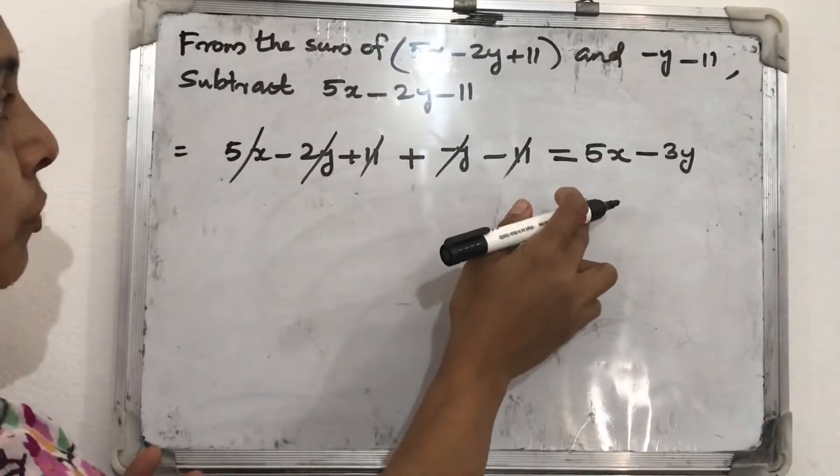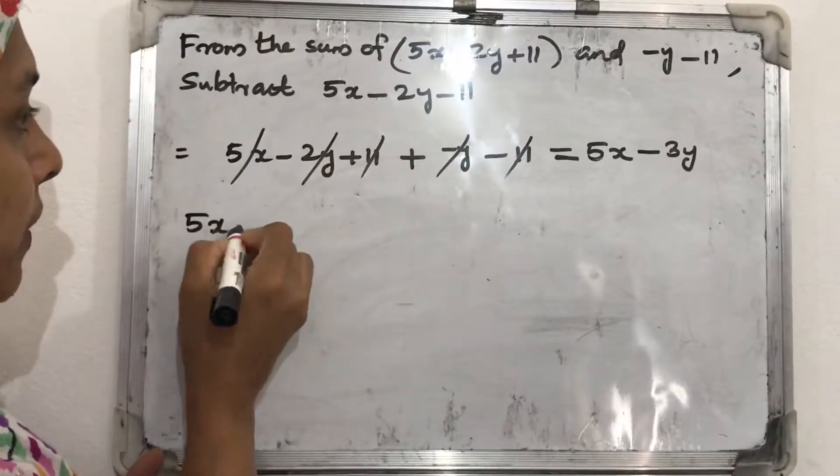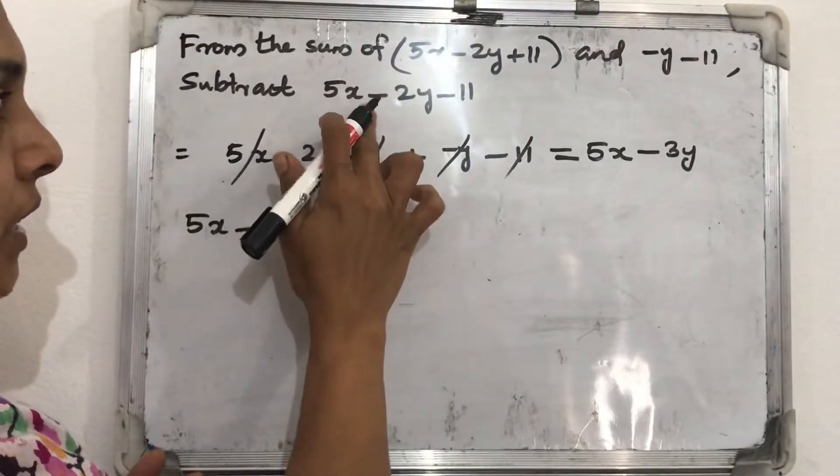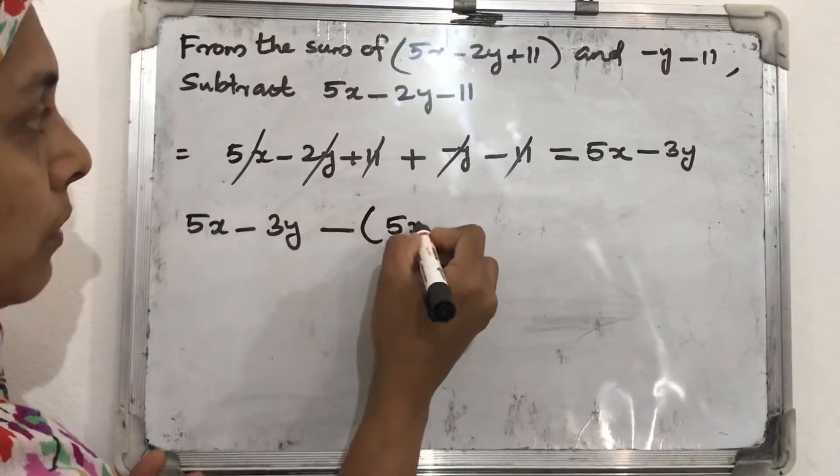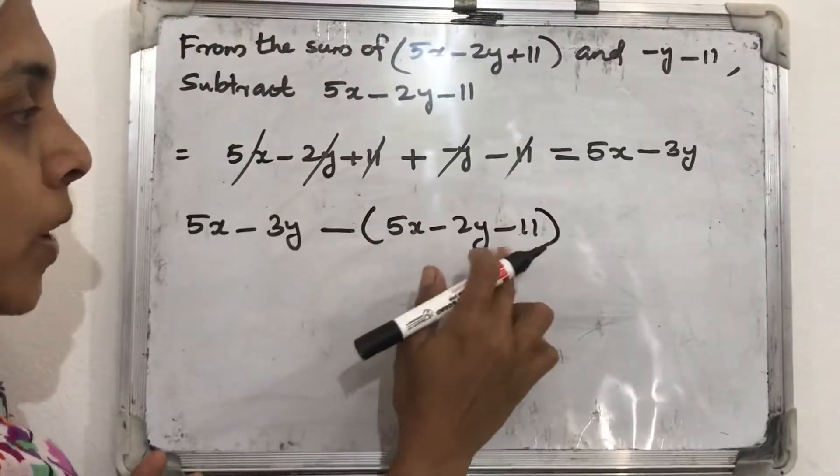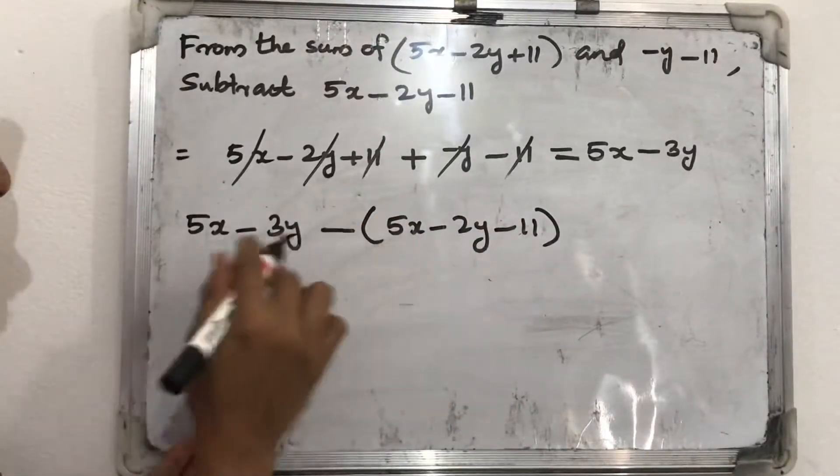Next, from that expression we want to subtract this. So next we can write 5x minus 3y minus this. Subtract this. So that should be written in brackets: 5x minus 2y minus 11.